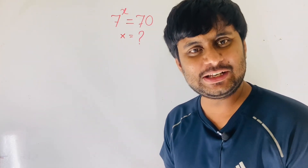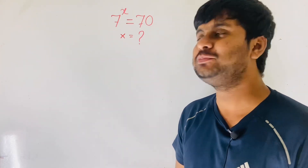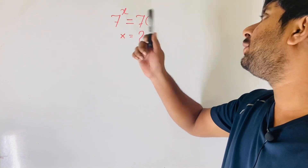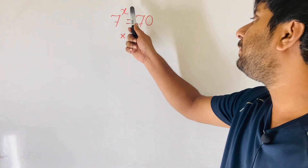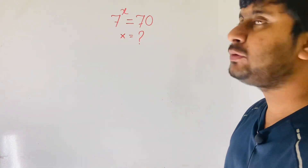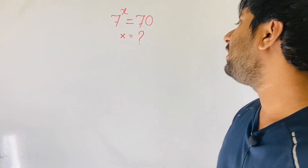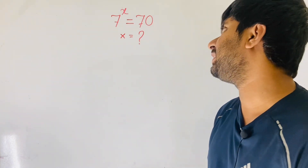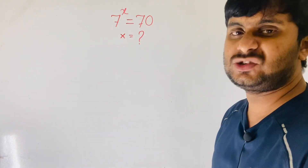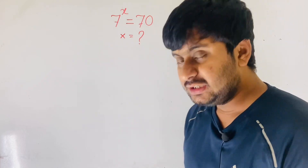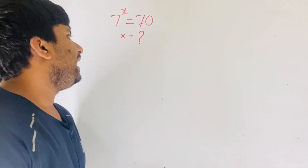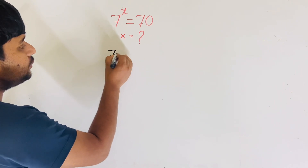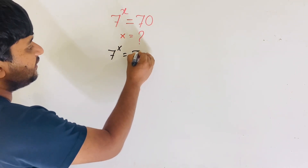Hello everyone, welcome to the classroom. Today we'll solve this exponential equation: 7 to the power x is equal to 70, and we'll find out the value of x.